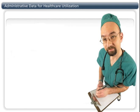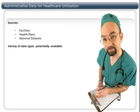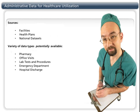Administrative data offers a fantastic source for public health data about healthcare utilization as either a risk factor or an outcome. You can get this data from facilities themselves, like a hospital, a health plan, or national datasets. Many data types are potentially available, like pharmacy records, office visits, lab tests and procedures, emergency department visits, or hospitalizations. The major caveat is that this data was not collected for the purpose of public health surveillance or program planning — its purpose is to create a bill and get it paid. Therefore, there are limitations and implications for interpreting this data.